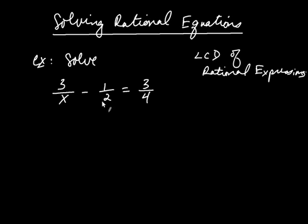What we're going to do, just like with solving equations involving fractions, is try to clear the fractions by finding the LCD. I want to find the least common denominator for all three rational expressions, which involves the x, the 2, and the 4. What's the smallest polynomial that x, 2, and 4 all go into evenly? That would be 4x.